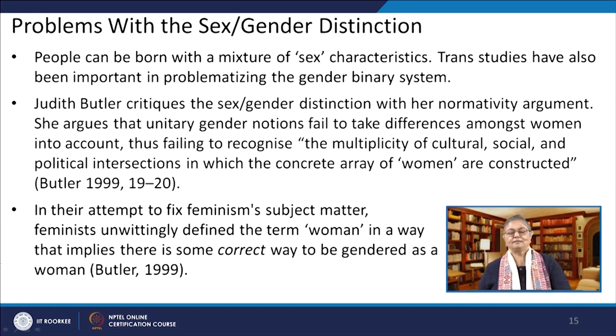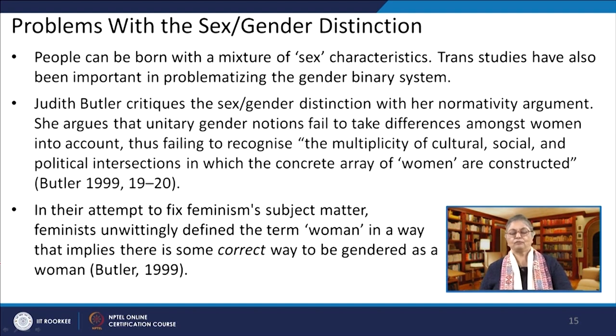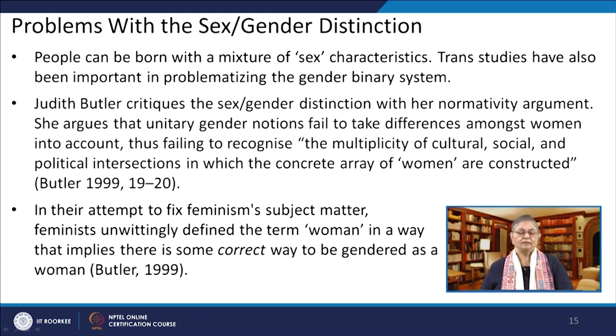Butler critiques the sex-gender distinction with her normativity argument. She argues that unitary gender notions fail to take differences among women into account, thus failing to recognize the multiplicity of cultural, social and political intersections in which the concrete array of women are constructed. In their attempt to fix feminism's subject matter, feminists unwittingly defined the term 'woman' in a way that implies there is some correct way to be gendered as a woman.